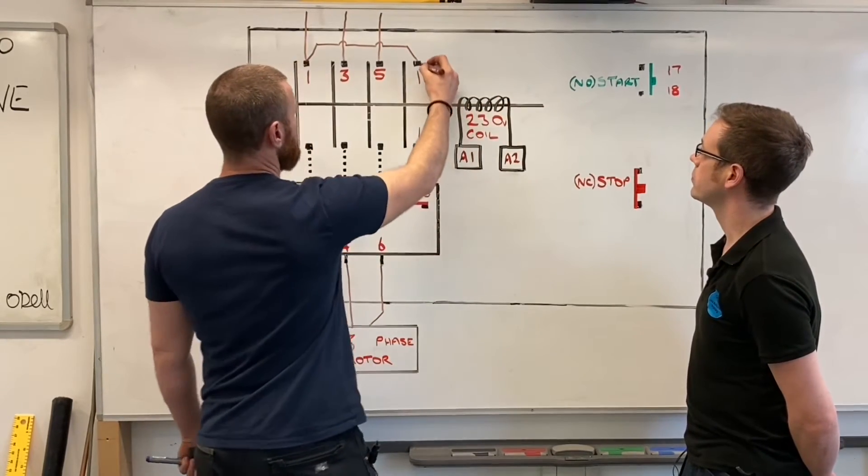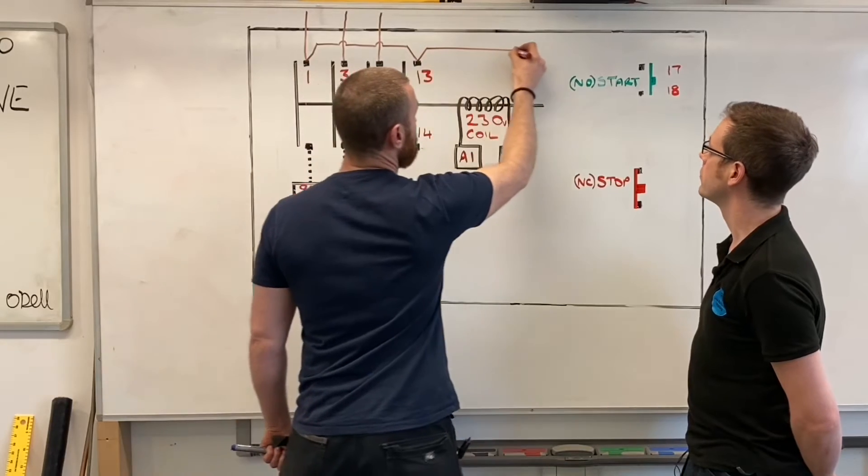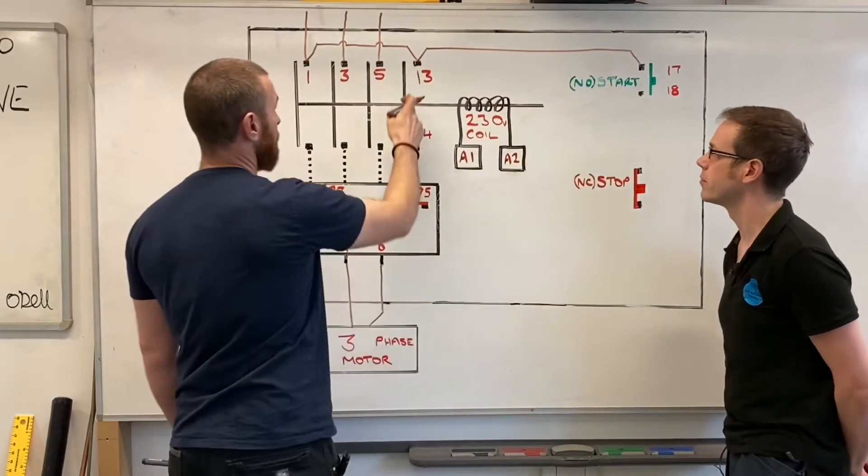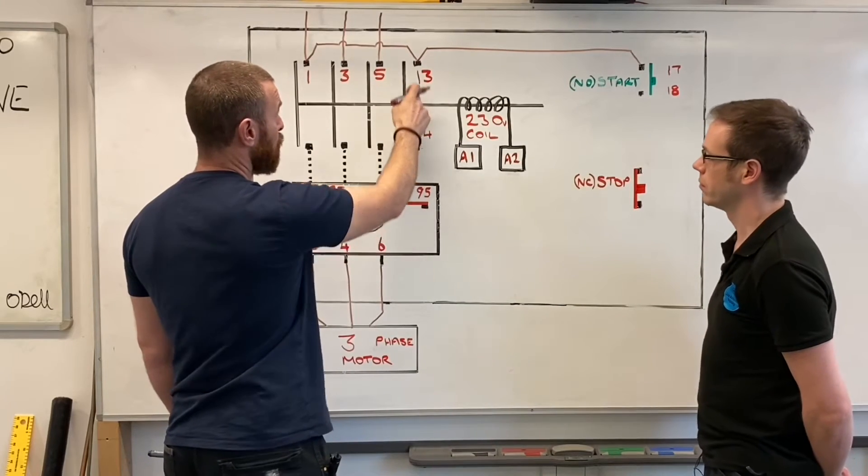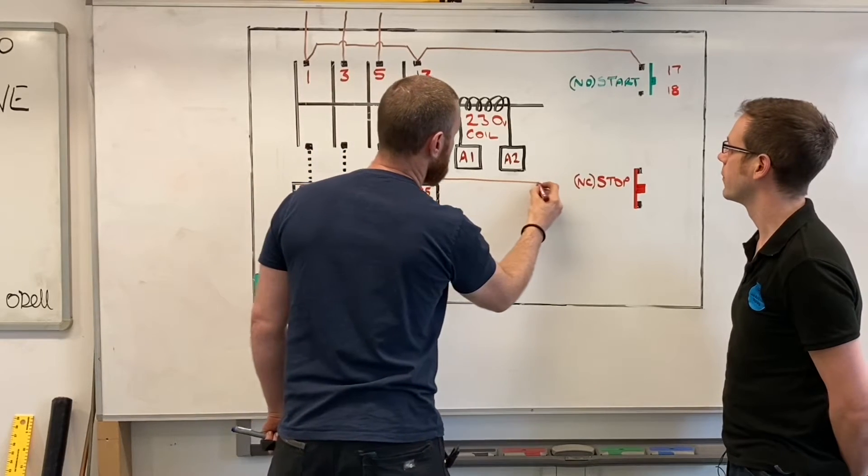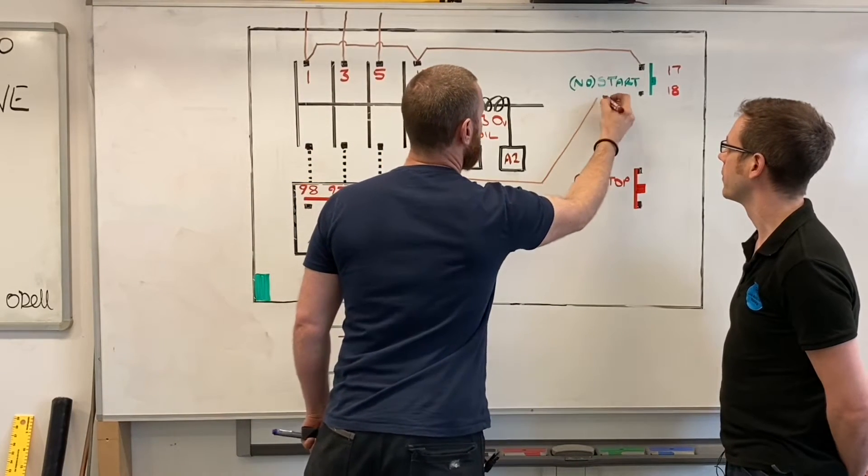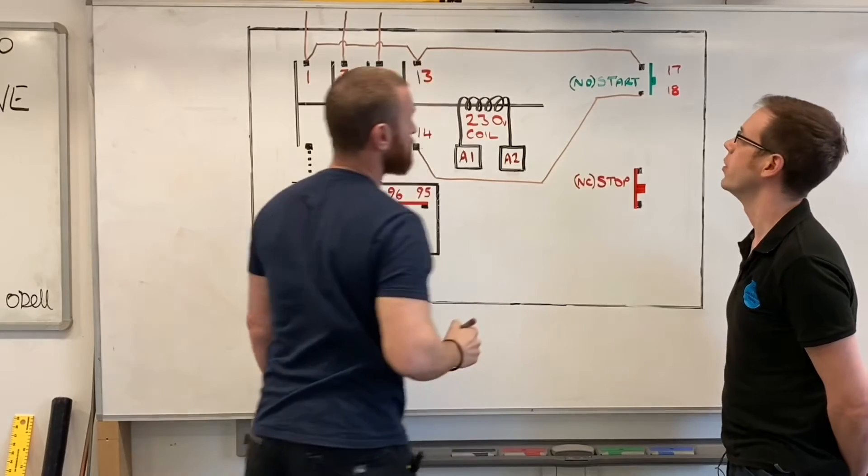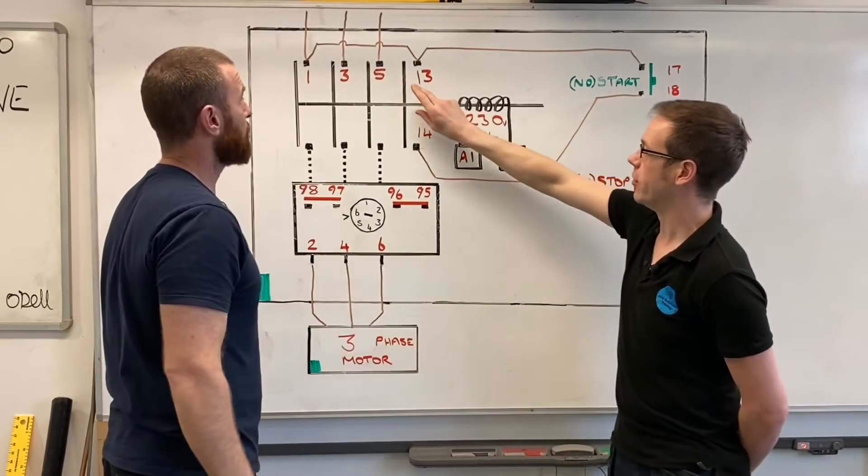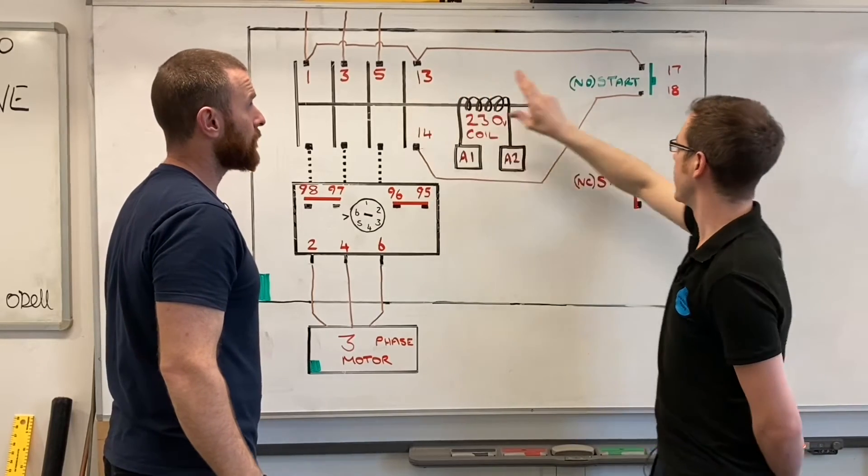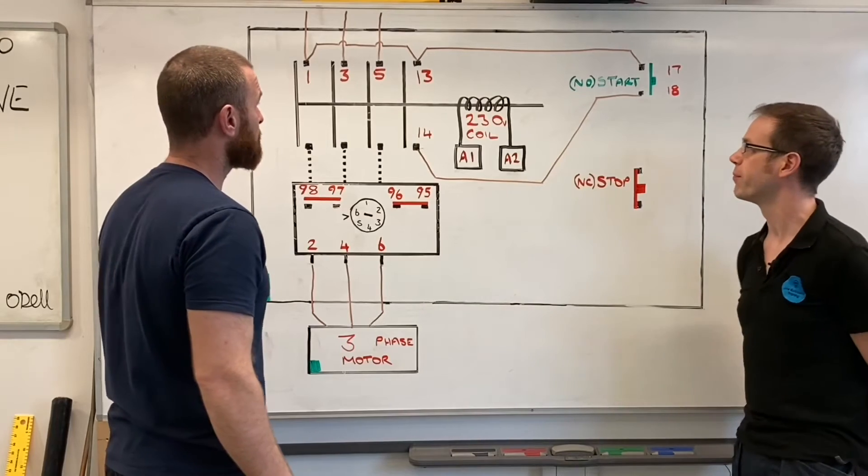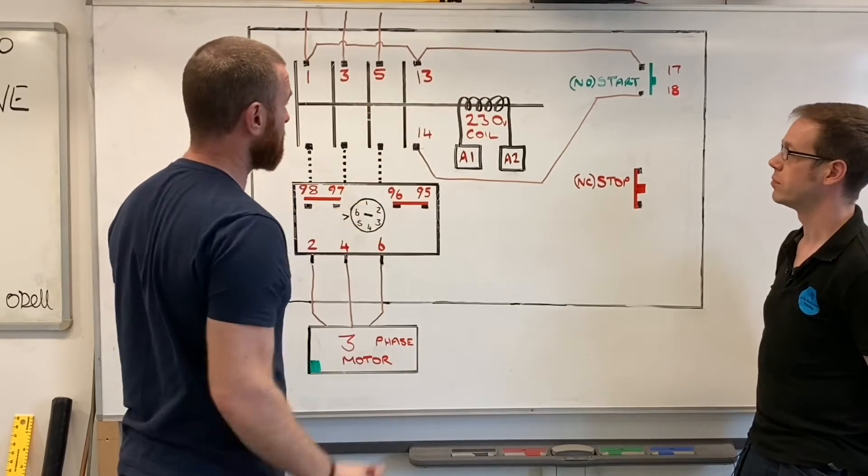We've got our start button over there, so we're going to come across all the way to our start here. Then through the other side of the normally open contacts, we're going to take from number 14 all the way across to number 18. We're seeing what we saw before: the start button and the auxiliary contact, the latching contact, they are in parallel with each other.